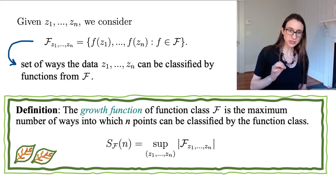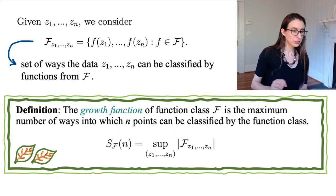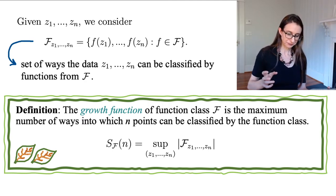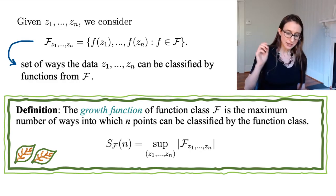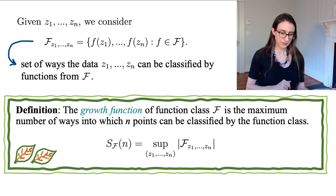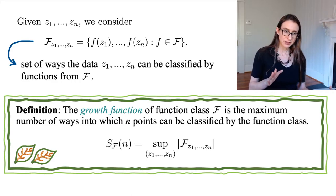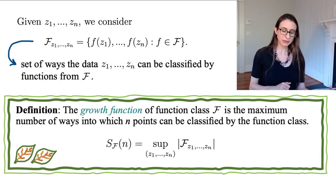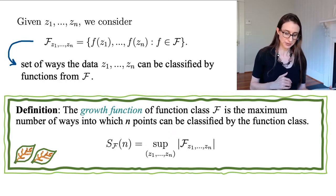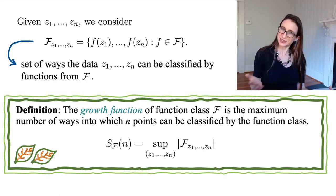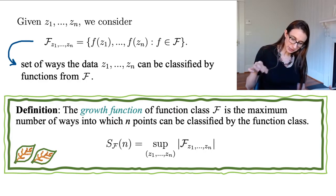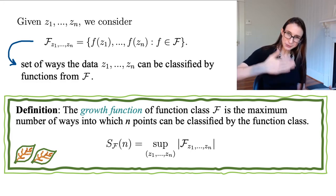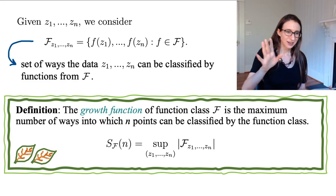The growth function of the function class F is the maximum number of ways N points can be classified by the function class — that is, if the data is in the best possible configuration to allow the most number of classifications. It's like the data were handed to you on a silver platter so that you could best classify them with functions from the class.